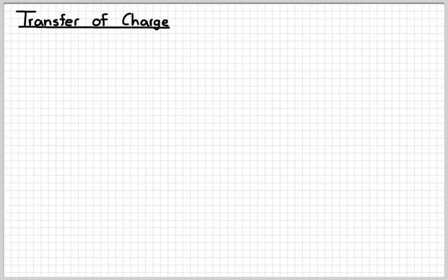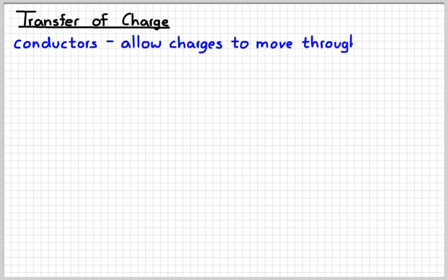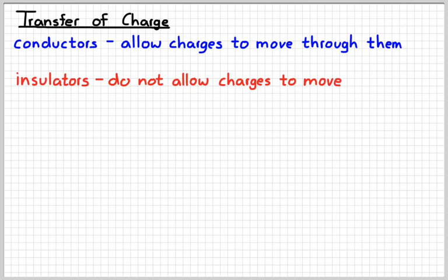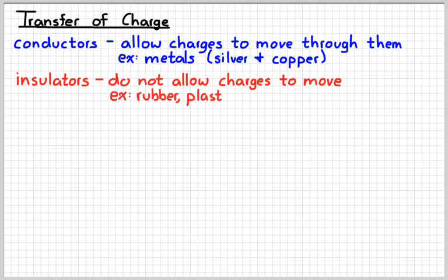So how do we actually go about transferring charges? The first thing we need to be able to do is differentiate between things that allow charges to move through them and things that will not. Things that allow charges to move through them are referred to as conductors. Things that do not allow charges to move through them are insulators. Good conductors are typically things like metals, like silver and copper, for example. Silver being the best, since silver is pretty expensive. Typically, if we want to make something a conductor, we make it out of copper. Good examples of insulators are things that are made out of rubber or plastic.